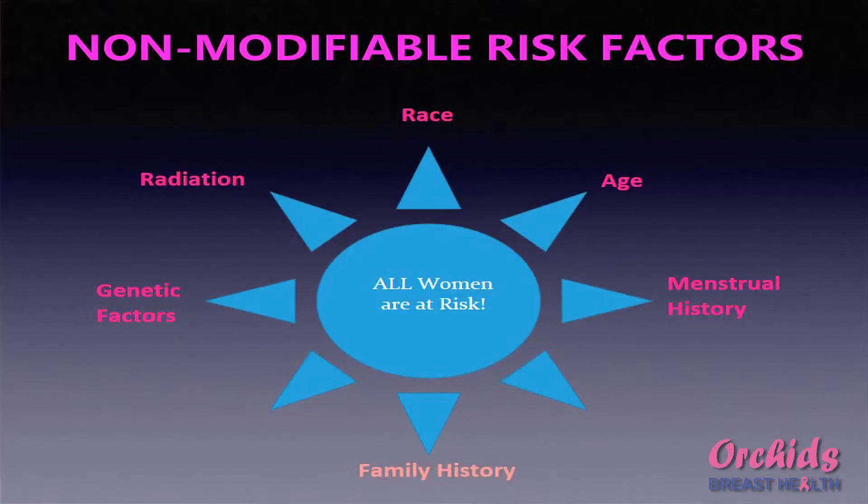Women with BRCA mutations have a very high risk of developing breast cancer and need to take certain very important measures to prevent the disease. Another non-modifiable risk factor is radiation — where young girls have had excessive radiation from certain tests or have received radiation therapy for certain cancers. This has, of course, become a very rare indication as of today.